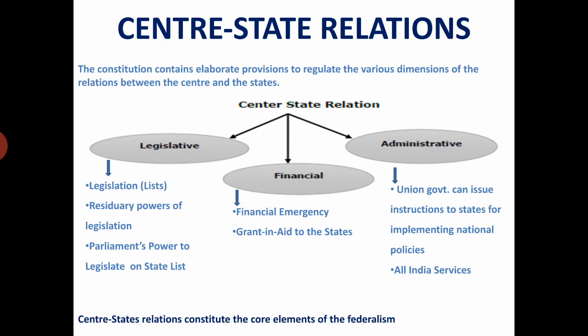In order to understand how centre-state relations affect federalism, we need to understand centre-state relations. The constitution divides the power between centre and state specifically in three areas: legislative, financial and administrative. If we compare law-making powers, we find that the centre enjoys more powers — it makes laws on subjects mentioned in the union list and concurrent list. During national emergency, the centre can make laws on subjects of the state list. When we compare financial power, we find that most of the taxes or revenue goes to the centre. The centre can take loans from other countries or international organisations, but not the state governments. Moreover, state governments depend upon the centre for grants during any calamity. With regard to administrative relations too, the centre dominates.